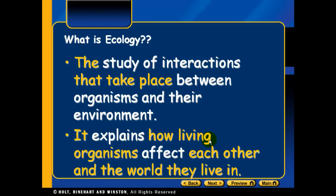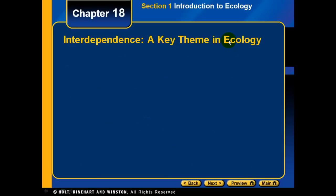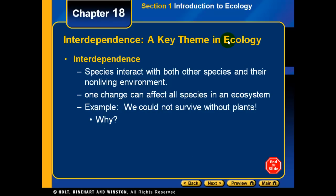Ecology can explain how living organisms affect each other and the world that they live in. A key term in ecology is interdependence. In interdependence, species interact with both other species and the non-living environment. One change in a species or in the non-living environment can affect all species in the ecosystem — we are all interdependent on each other.